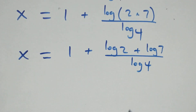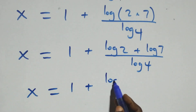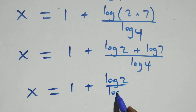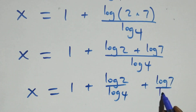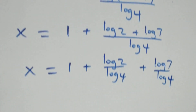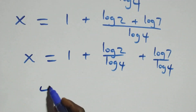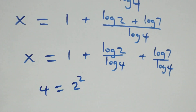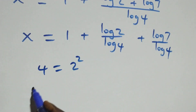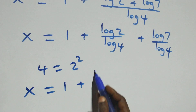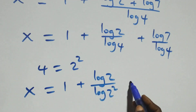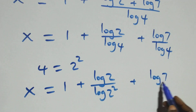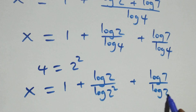Then we separate this into two fractions, and we have x equals 1 plus log 2 over log 4, plus log 7 over log 4. Now we can write 4 as 2 times 2, which is 2 squared. So the equation becomes x equals 1 plus log 2 over log 2 squared, plus log 7 over log 2 squared.